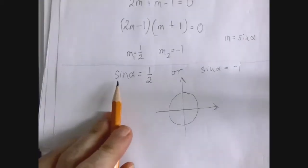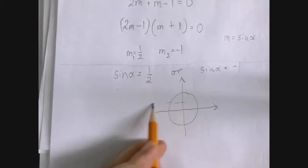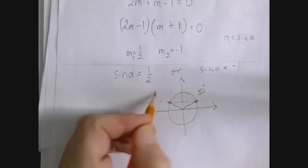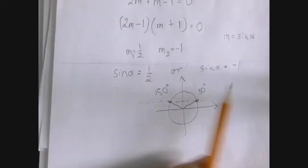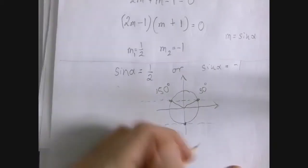Sine is the second coordinate, so we're looking for points on the unit circle whose y coordinate is half. So it looks like two angles do that, 30 degrees and 150 degrees. And sine alpha equals negative one happens when alpha is negative 90.